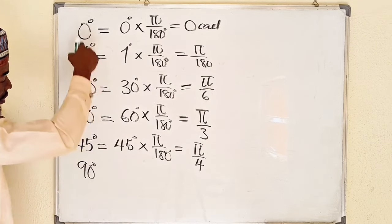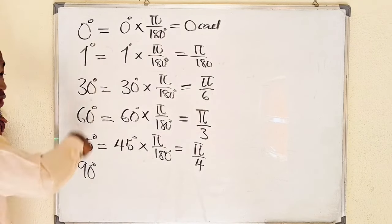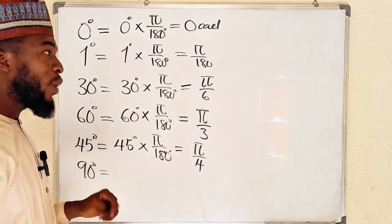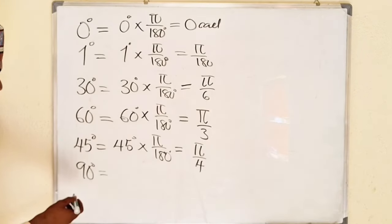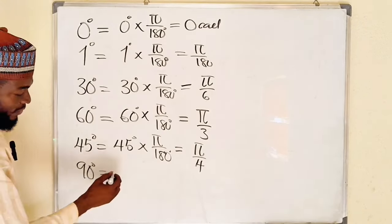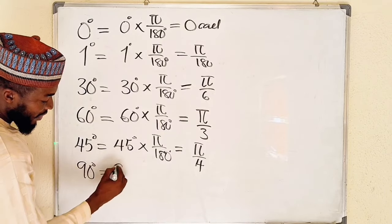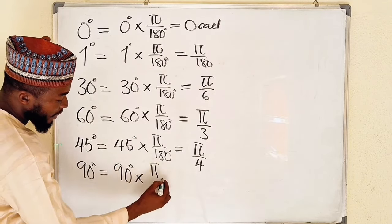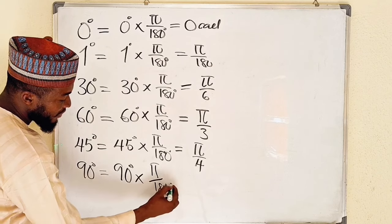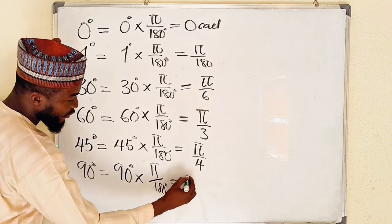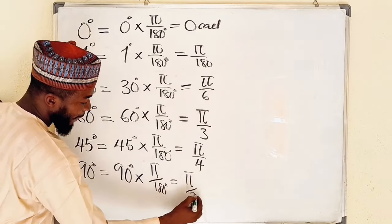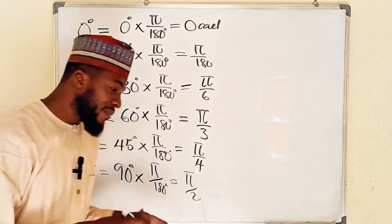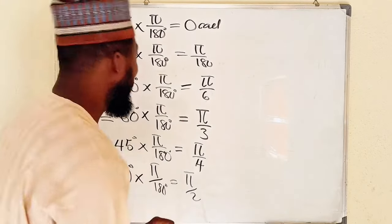All these angles are in the first quadrant. If you move into another quadrant, remember only the sign will change. So 90 degrees multiplied by π divided by 180 degrees is equal to π divided by 2. So π divided by 2 and 90 degrees mean the same thing.